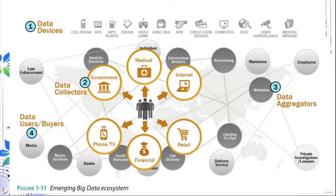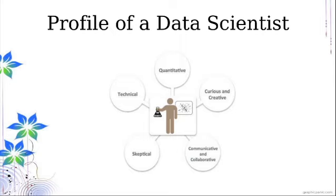Considering this amount of information, its speed of generation, and why we need it, we need a data scientist to bridge the gap — how to use this data and put it to good use. A data scientist must have technical and quantitative knowledge including statistics, curiosity and creativity to extract information from unstructured data, the ability to communicate results and collaborate with others, and skepticism to check whether data sources are actually reliable.